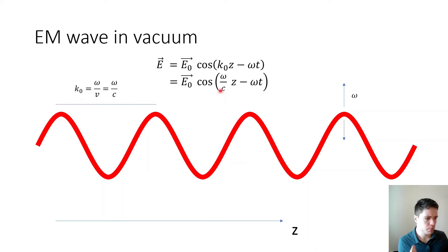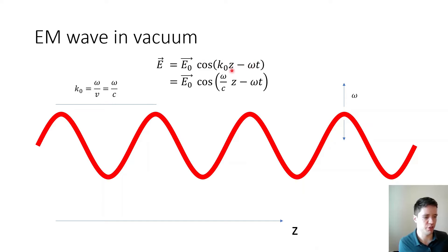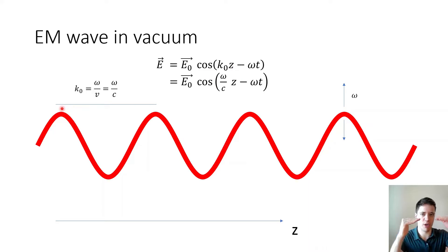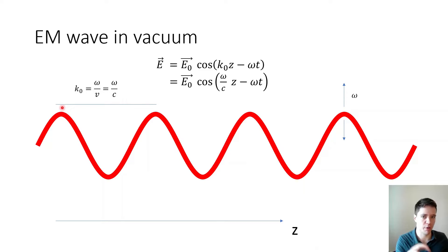To understand why this relation holds, it's helpful to use the equation to track the location of one of these amplitude peaks over time. The cosine function has a peak whenever its argument equals zero, for example when z equals zero and t equals zero. As time increases we subtract a larger and larger number inside the argument, so we need to select a higher z value to compensate. As time progresses we subtract more using time, so we must add more using z — meaning the z value where the argument is zero shifts forward, and this wave propagates in the forward direction.